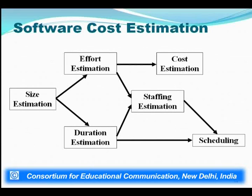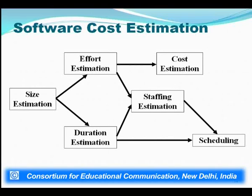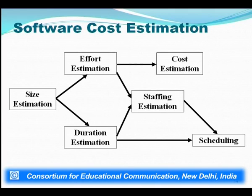Size estimation can be expressed as effort estimation and duration estimation. If effort is high, duration can be low; if duration is high, effort can be low — not a strict algebraic relationship, but a correlation. If you want to complete the project in less duration, more effort must be applied. Staff estimation depends on effort and duration estimation; then scheduling is done, and cost estimation is purely the byproduct of effort estimation.